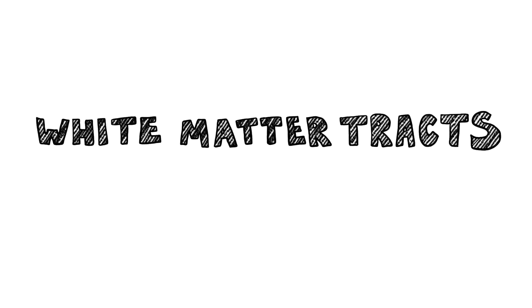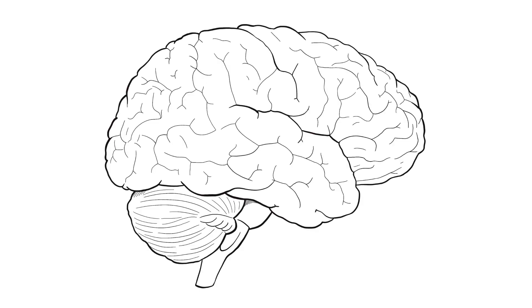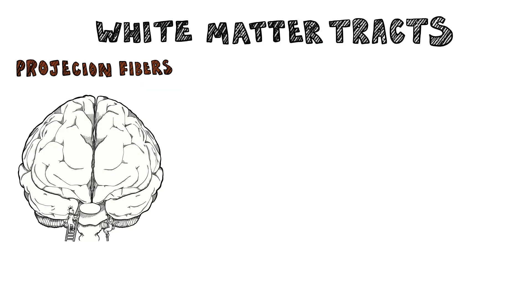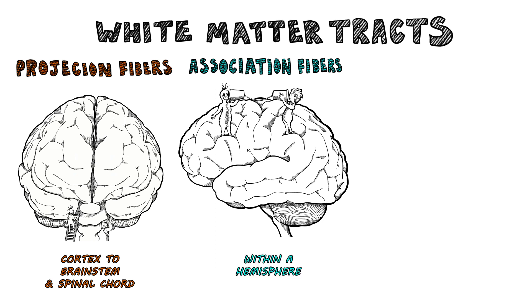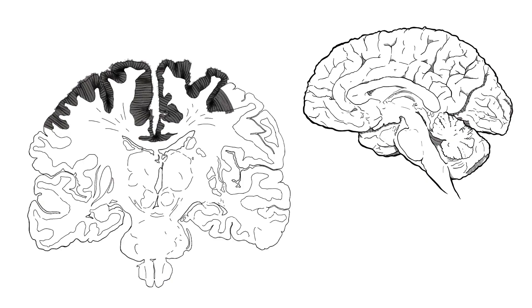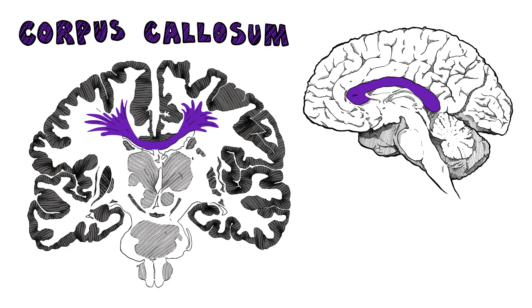Three white matter tracts act as information relays: commissural, association, projection — the communication highways. Projection fibers go from the cortex to the brainstem and spinal cord. Association fibers go within a hemisphere, connecting its regions. The commissural fibers cross between the hemispheres — the largest, the corpus callosum, links them without fears.